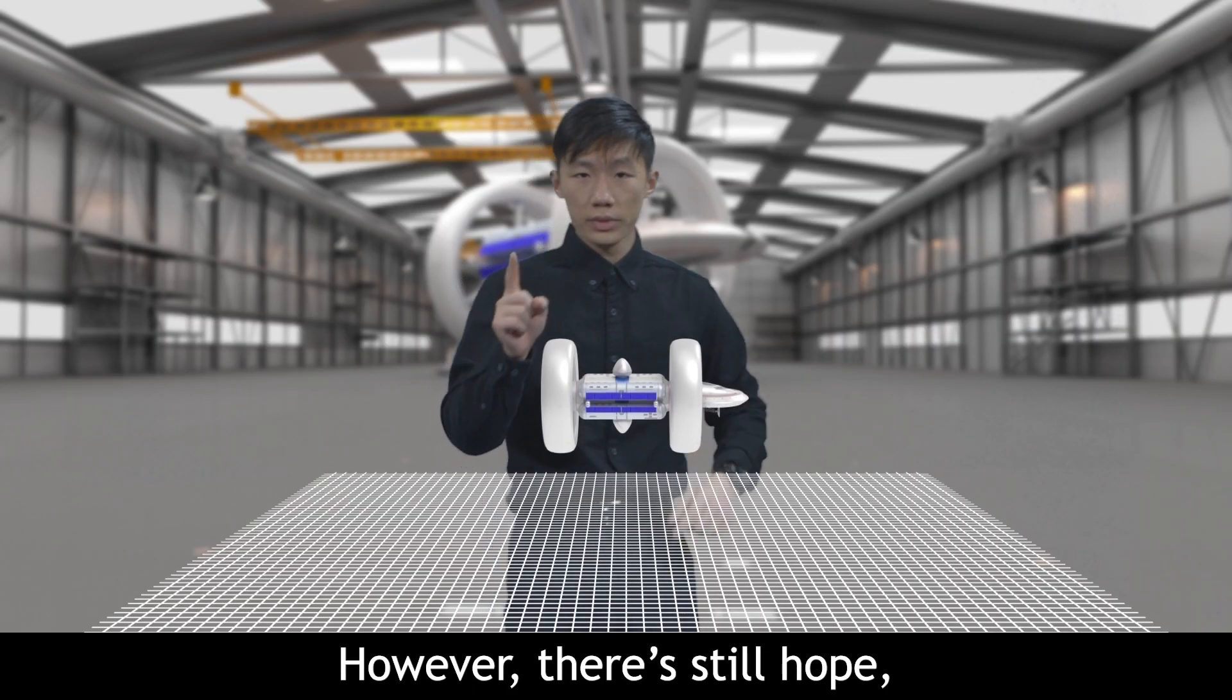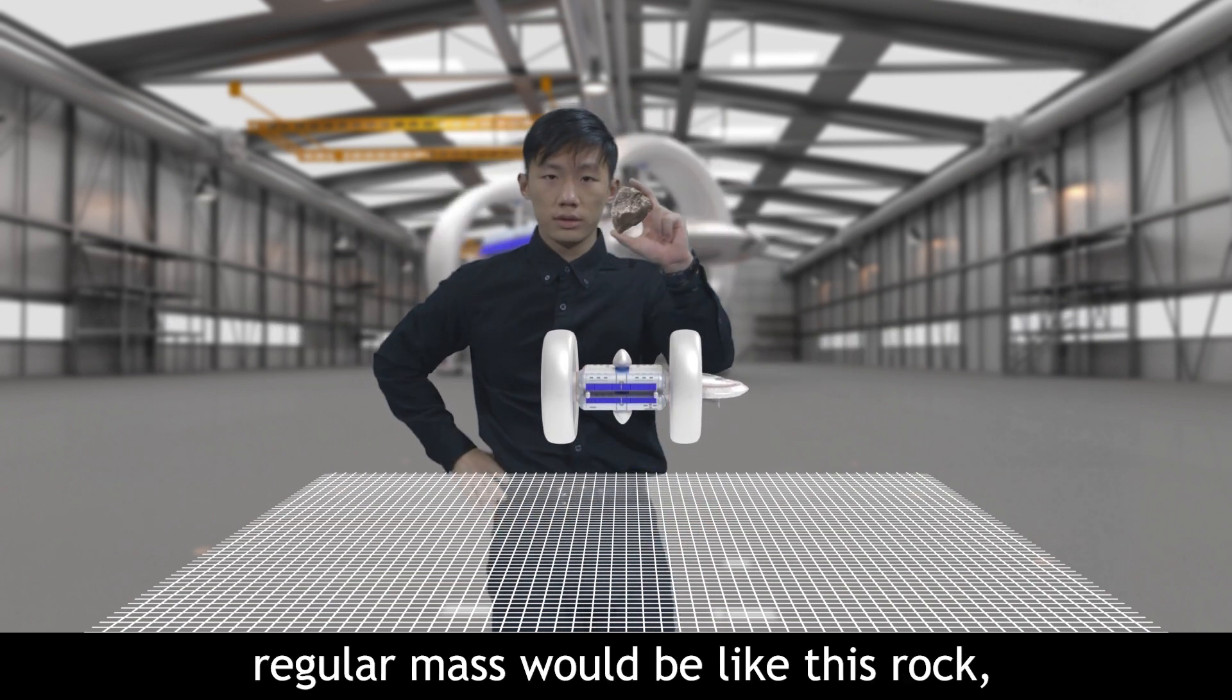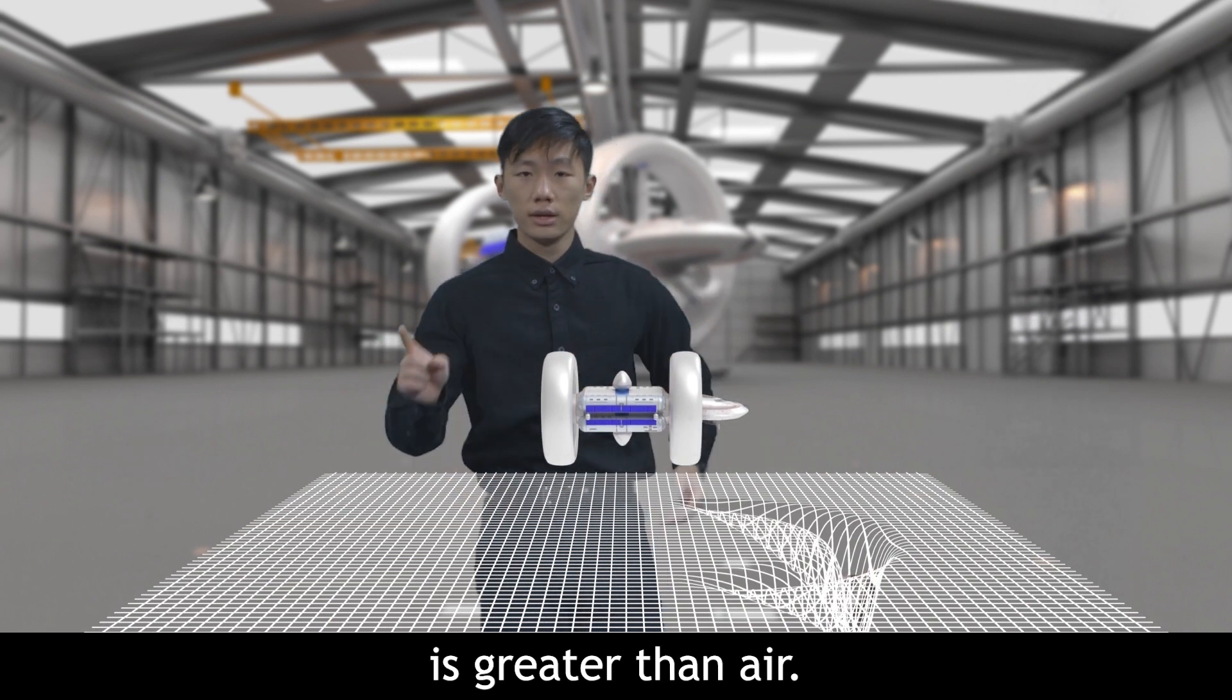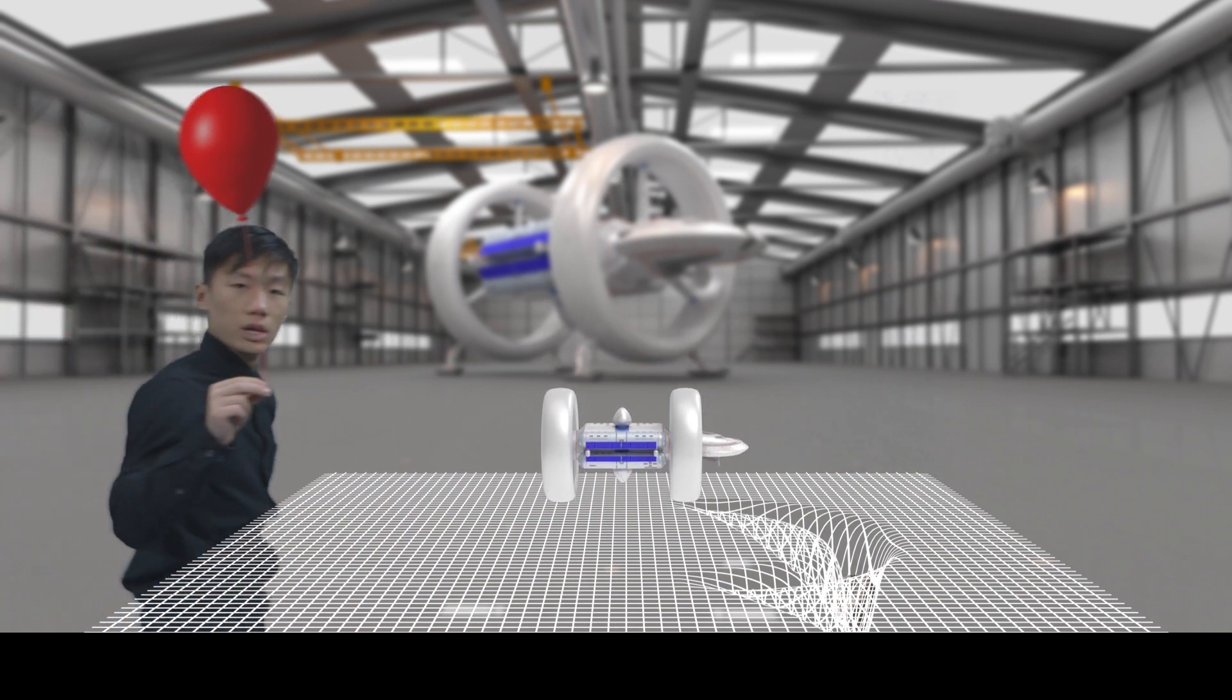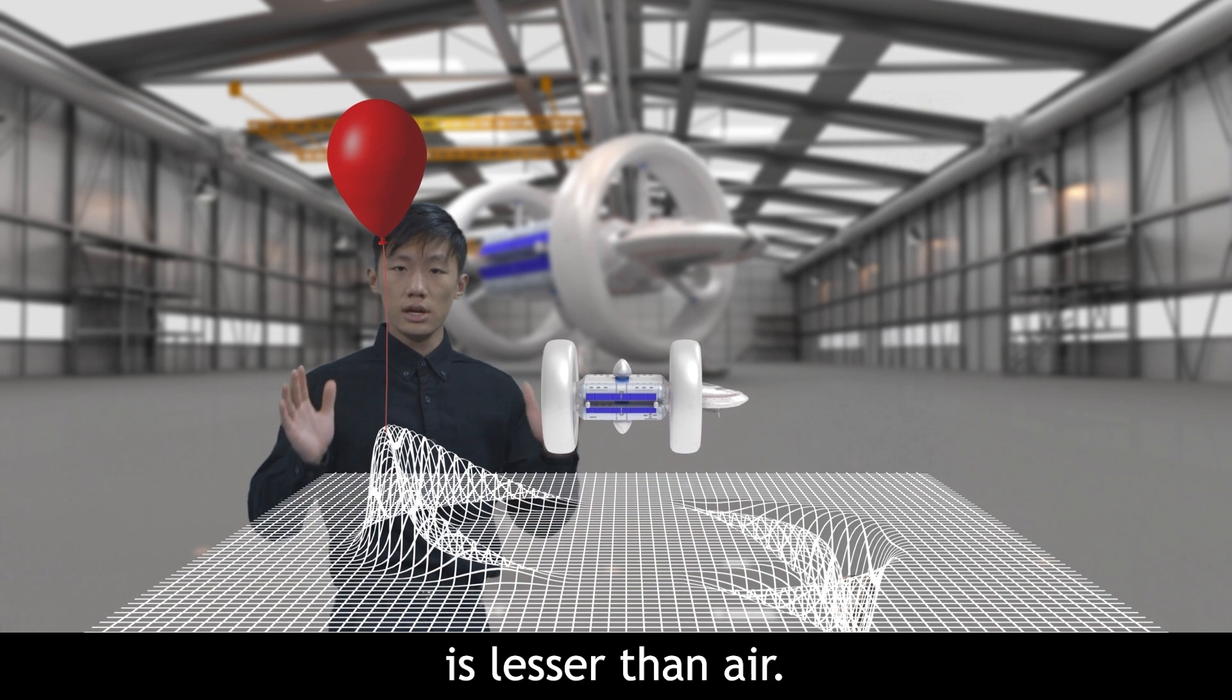However, there is still hope. If we compare space to the atmosphere, regular mass would be like this rock. It falls because its overall density is greater than air. Negative mass would be like this balloon. It floats because its overall density is less than air.